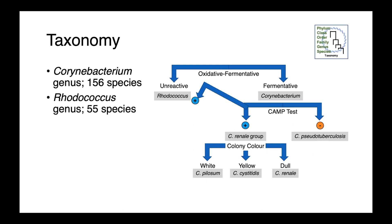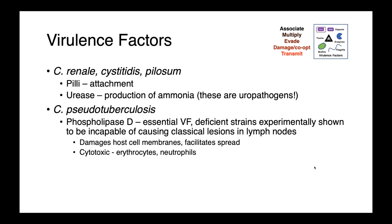Within the C. renali group, pullosum, cystididis, and renali can be differentiated based on colony color and morphology. The Corynebacterium renali group all cause urinary tract infections, so when we think about their virulence factors, the presence of urease makes a lot of sense.